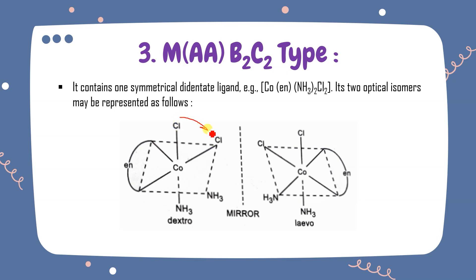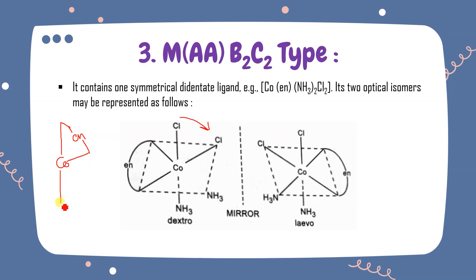The mirror image of the dextro arrangement is levo. It is better to keep the bidentate ligand on the axial positions — start from the axial position only, that gives a clear concept with no confusion. Both arrangements are correct; making a habit of starting from the axial position helps.